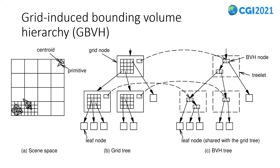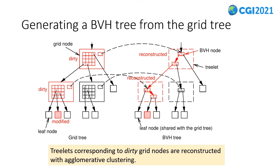The grid-tree is easily modifiable during animations. The key point is that we only translate the grid-nodes that are touched in the scene modification — such grid-nodes are called dirty-nodes. The translation of each dirty-node to a tree-let is independent of others, and thus parallel processing can be applied. As for the algorithm for generating each tree-let, agglomerative clustering was found to be the best approach.